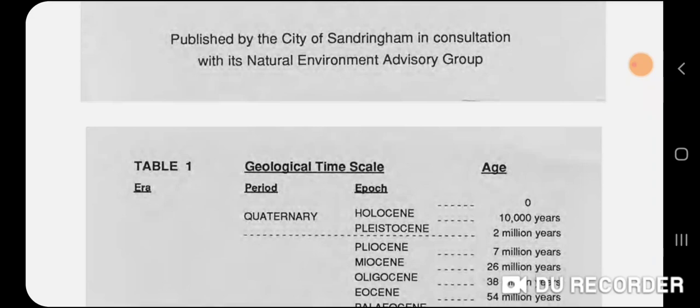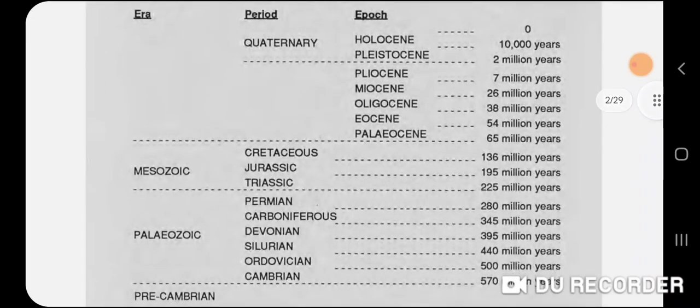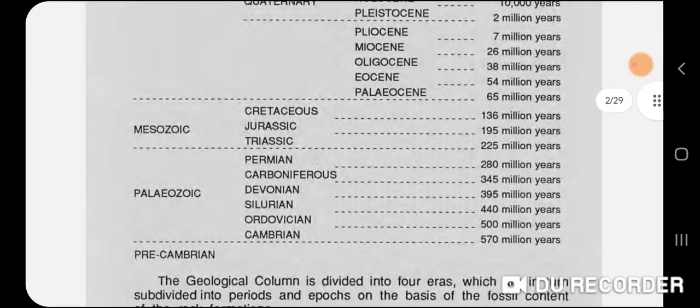The PDF includes a geological time scale — a lot of these dates have probably changed a little. The end of the Cretaceous is now about 66 million years, the Cambrian is around 565 million years, and the end of it is about 520 million years. Those times have changed a bit and they keep changing.